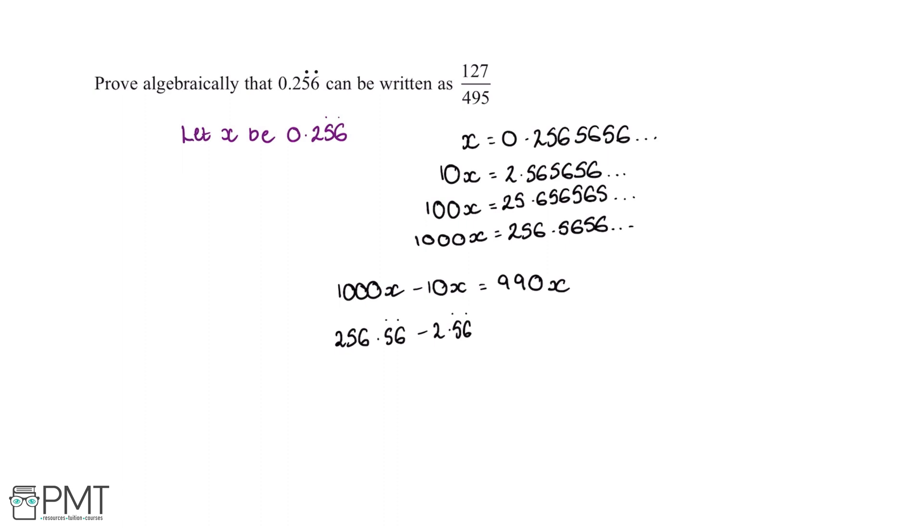So what this means is 256.56 reoccurring minus 2.56 reoccurring will be equal to 254.